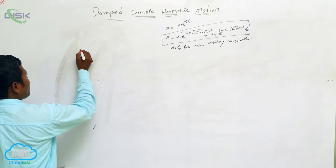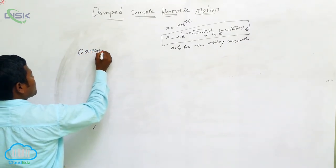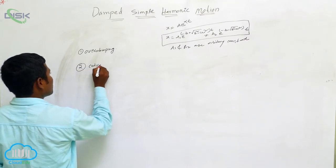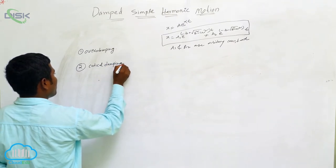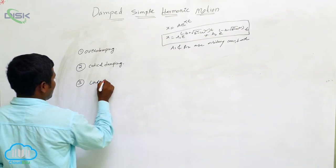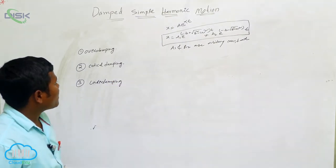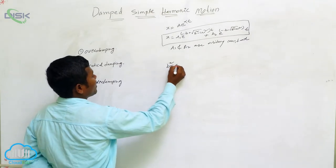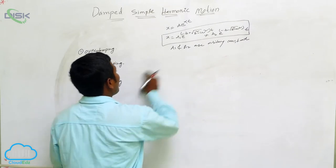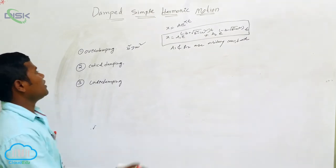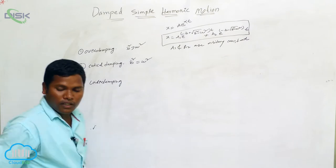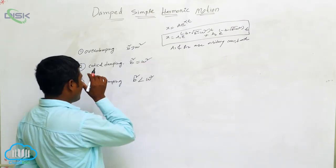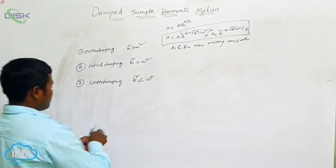There are three cases: first, over damping; second, critical damping; third, under damping. The relation between b² and ω² determines the case. Over damping: when b² > ω². Critical damping: when b² = ω². Under damping: when b² < ω².